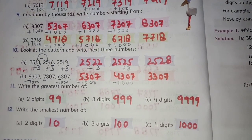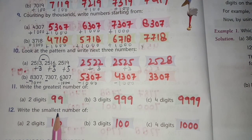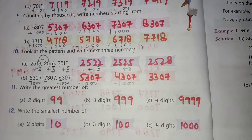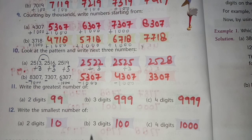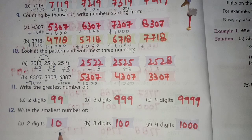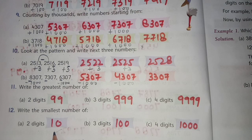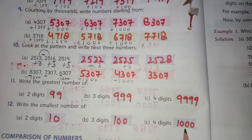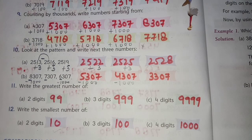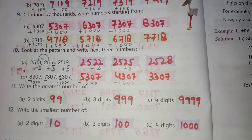Question number 12: write the smallest number of two digits. To write the smallest number we use digits 0 and 1. The smallest two-digit number is 10 because a number can't begin with 0, so the first digit is 1 and then 0. The smallest three-digit number is 100, and the smallest four-digit number is 1000. I hope you all understood this exercise.